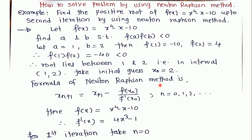Take the first example: find the positive root of f(x) = x⁴ - x - 10 up to the second iteration using Newton-Raphson method. Here, the given function is x⁴ - x - 10. We find the values of a and b such that f(a) × f(b) is less than 0.